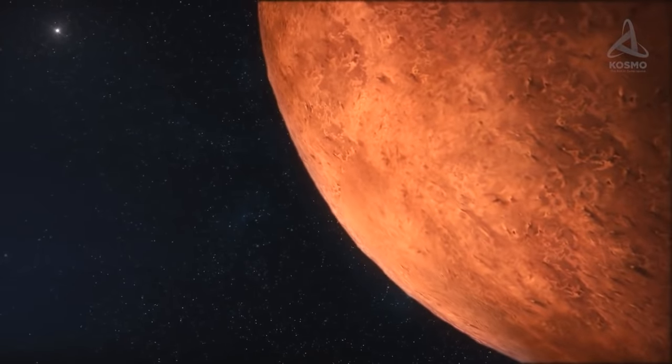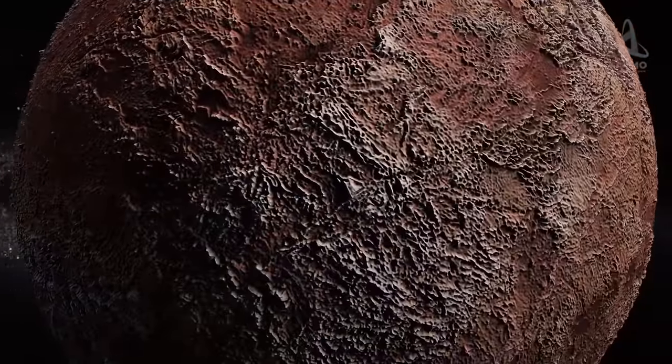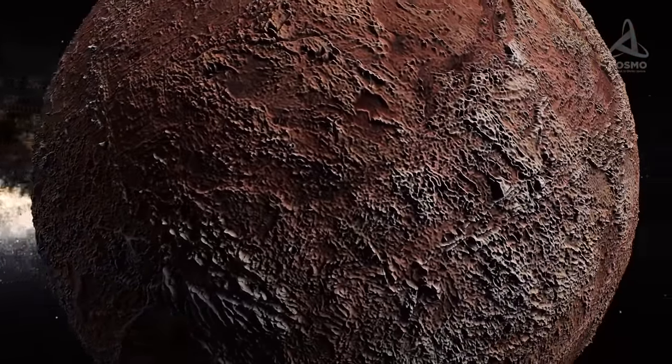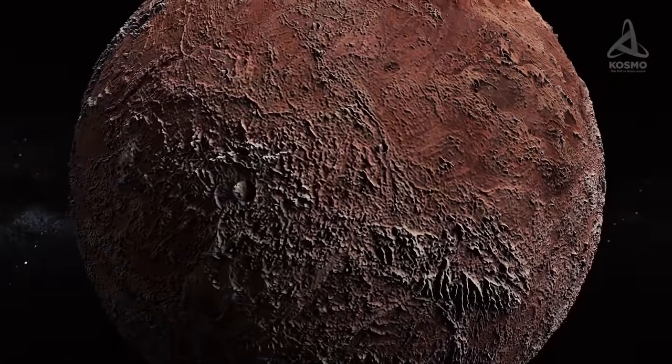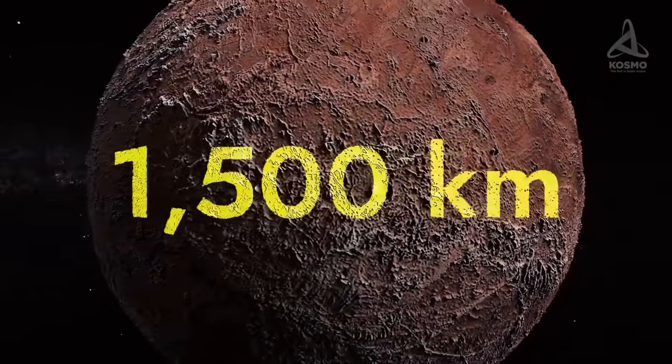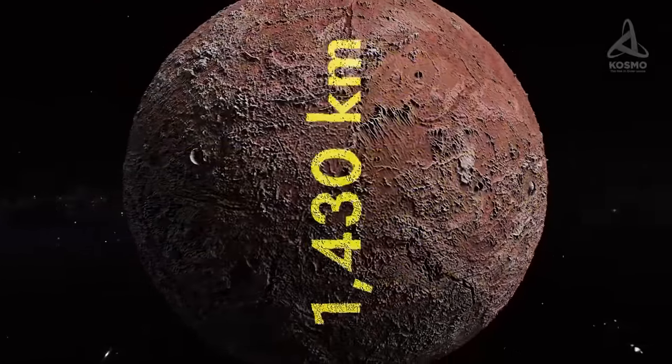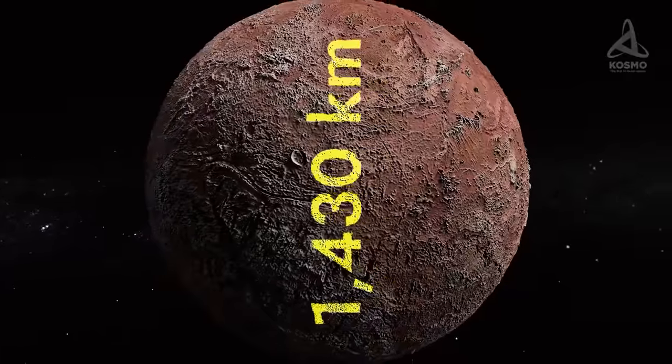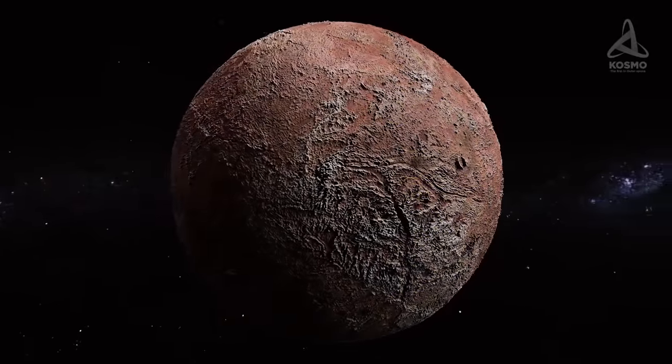On the 23rd of April 2011, Makemake's disk was passing in front of a dim star in the constellation Coma Berenices. Thanks to this eclipse, it was possible to estimate the planetoid's size rather accurately. Its equatorial diameter measures 1,500 kilometers. Its polar diameter turned out to be 1,430 kilometers, which is around 62% that of Pluto.